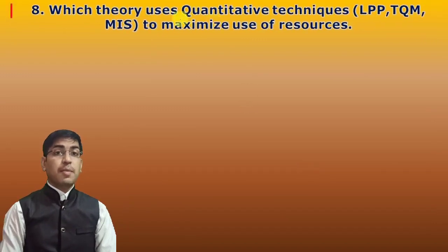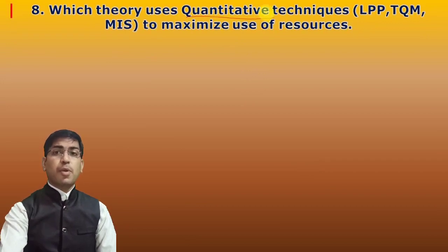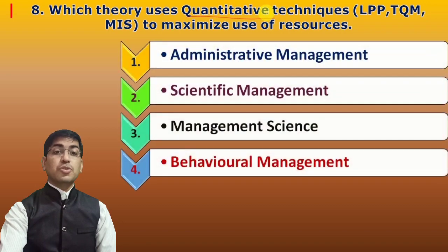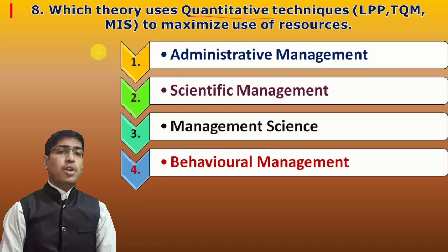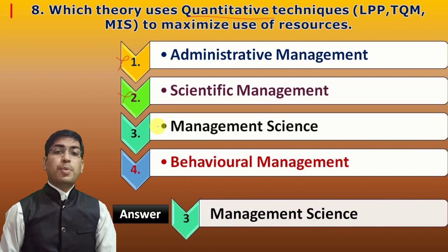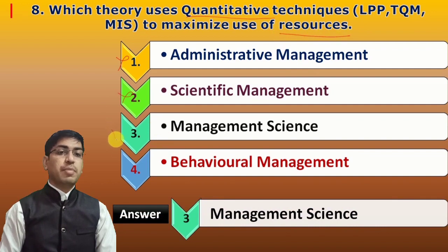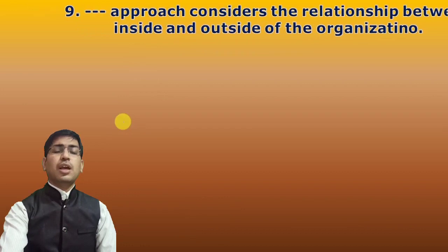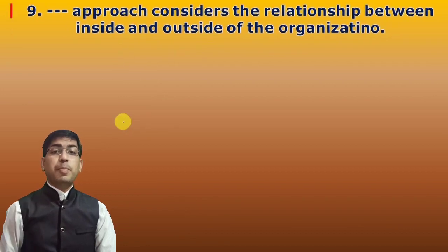Next question: Which theory uses quantitative techniques? We are moving to the next theory here. Different quantitative techniques include LPP (Linear Programming Problems), TQM (Total Quality Management), and MIS (Management Information System) to maximize the use of available resources. The answer is management science, since it deals with optimum utilization of resources through quantitative techniques.